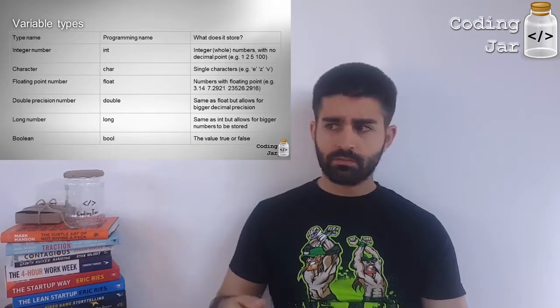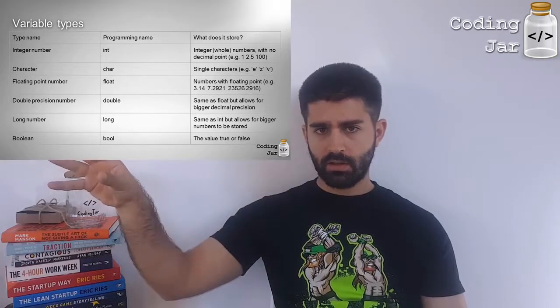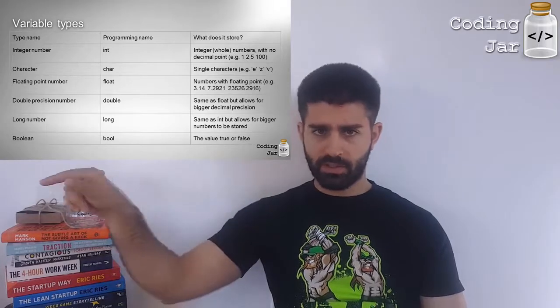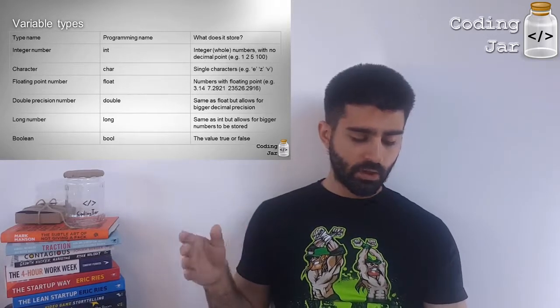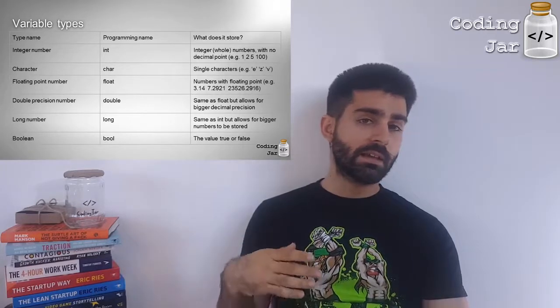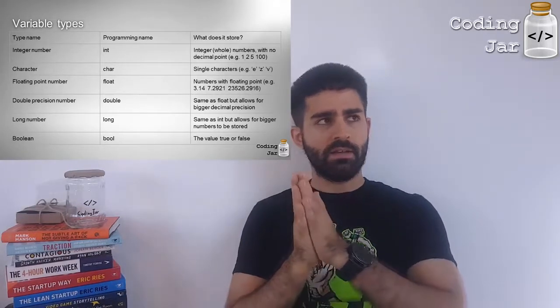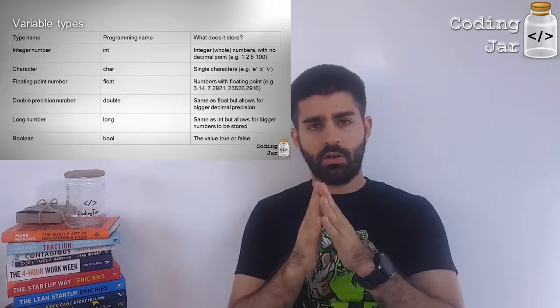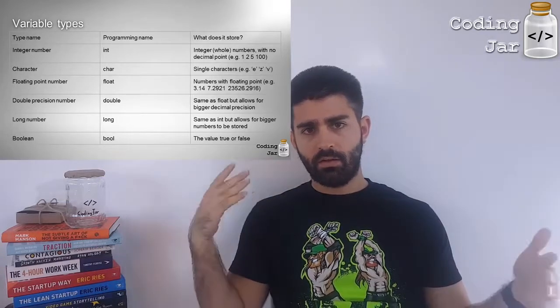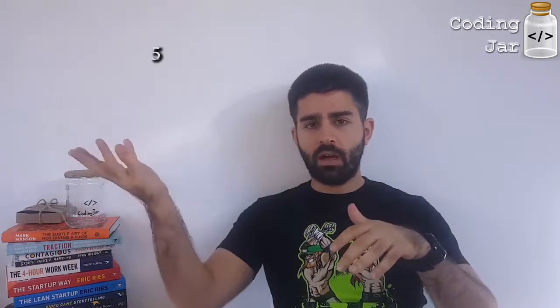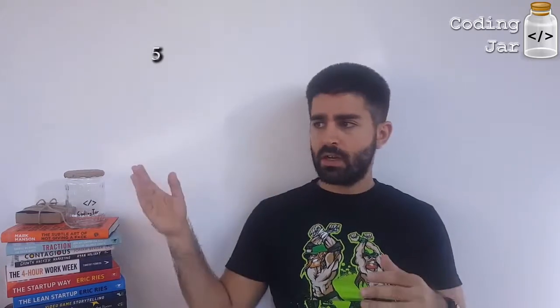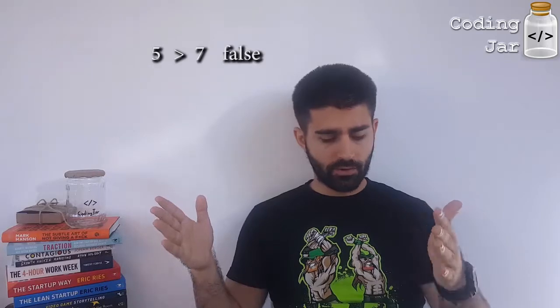Then we've got floating points which are integers with dot something like 1.5, 2.7, 3.14, you know, pi. Then there's double precision numbers which are called a double. It's the same as float but allows for bigger decimal precision. Long numbers, it's like int but allows for bigger values to be stored. And boolean. Boolean is a variable type that stores either true or false, zero, one. It's what PCs normally understand and it's used to calculate logical operations like is 5 larger than 2. If a computer were to calculate that it would answer true. Is 5 larger than 7? That would calculate to false. So this is what a boolean is, a true or false statement.